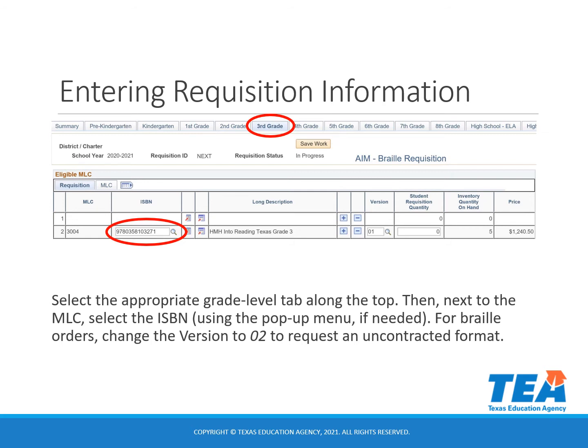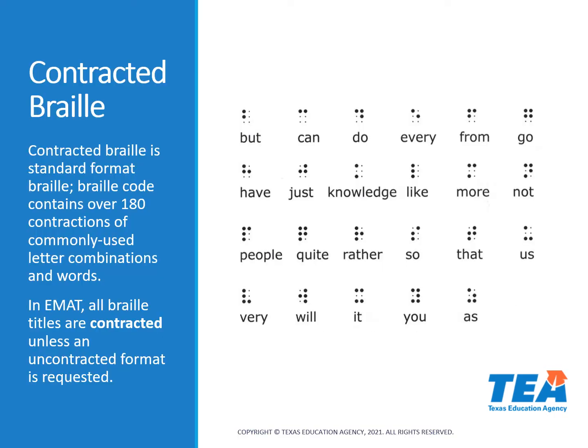For Braille, you can also use the version option field to select a special format uncontracted title. Contracted Braille is standard format Braille, and Braille code contains over 180 commonly used contractions of letter combinations or words. You can see some examples here. In EMAT, all Braille titles are going to be contracted unless you make a request for a special format uncontracted title.